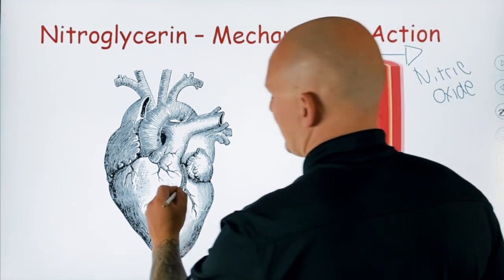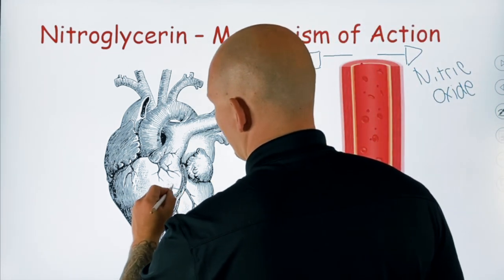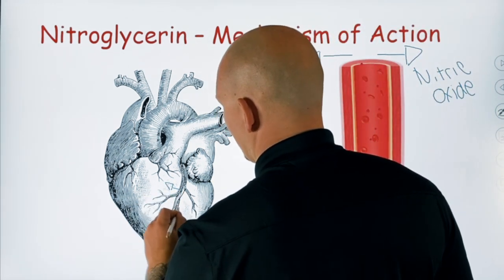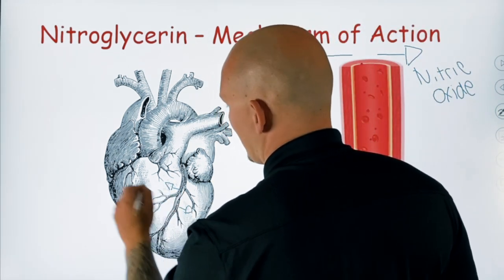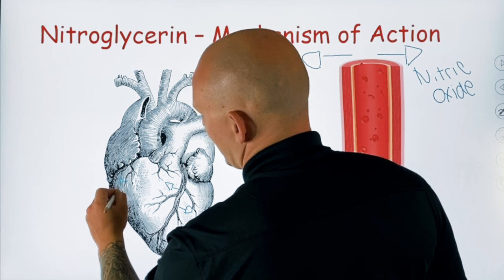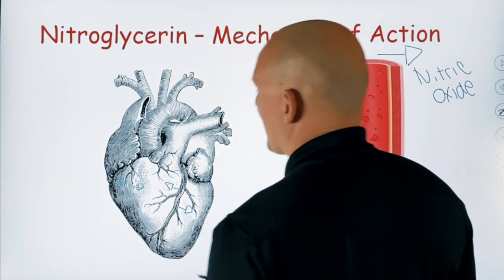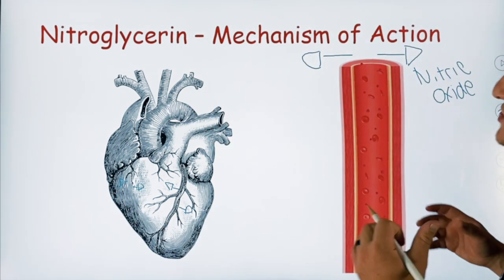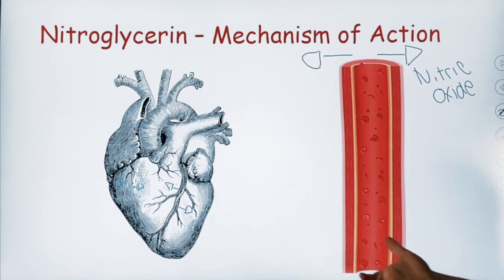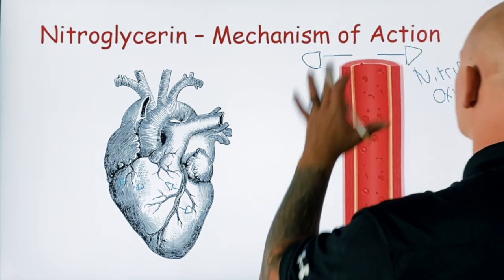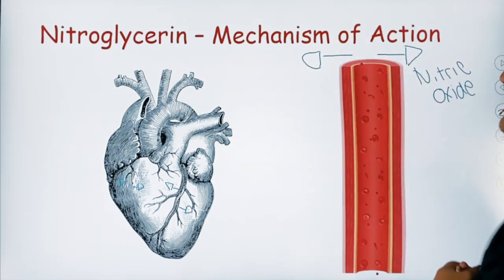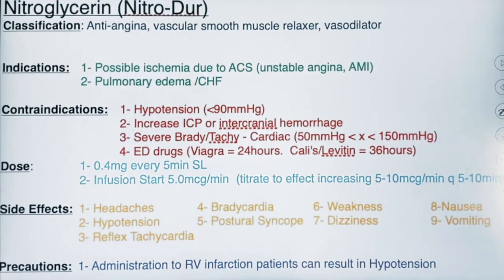Nitroglycerin also causes coronary vessel dilation, which is a good thing if we are in a myocardial infarction situation, which is really what nitro is going to be used for in those particular situations. That is its quick down-and-dirty mechanism of action.